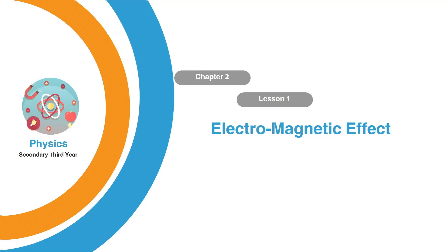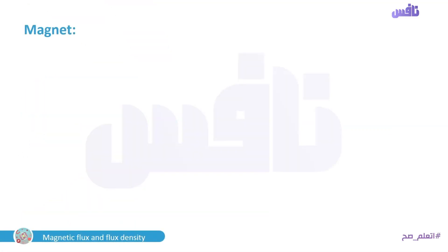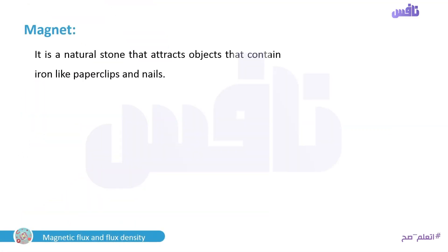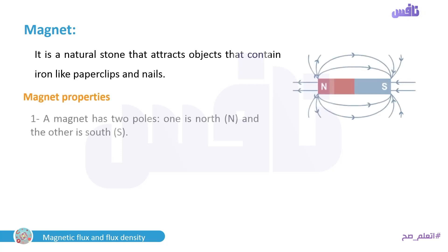Hello dear students, welcome back again to Enjoy Physics. Today we will talk about electromagnetic effects. Lesson one: what is a magnet? It is a natural stone that attracts objects that contain iron, like paper clips and nails, as shown in the following figure.